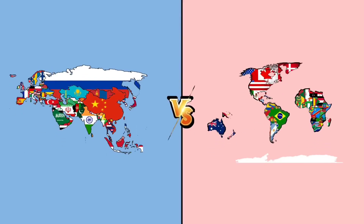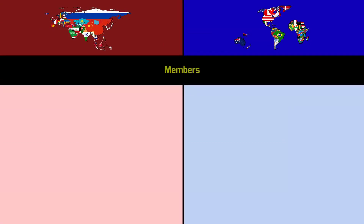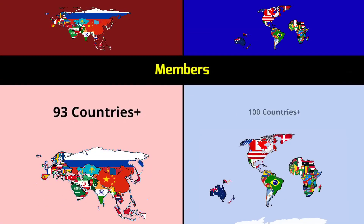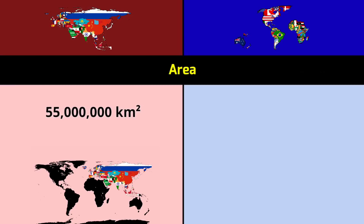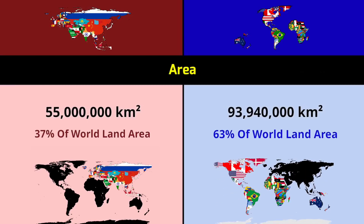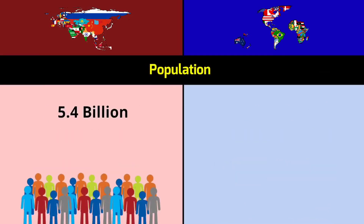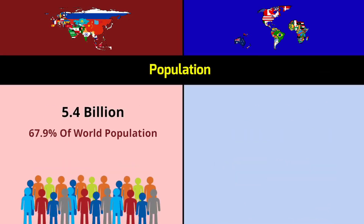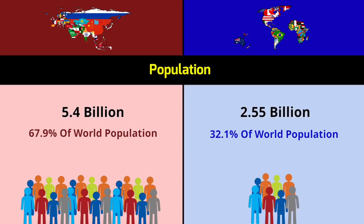Hello guys, today we see Asia versus Rest of World. Welcome to the Data Duck YouTube channel. Members from more than 93 countries vs more than 100 countries. Area: 55 million square kilometers, 37% of world land area for Asia; 93.94 million square kilometers, 63% of world land area for the Rest of World. Population: 5.4 billion, 67.9% of world population vs 2.55 billion, 32.1% of world population.